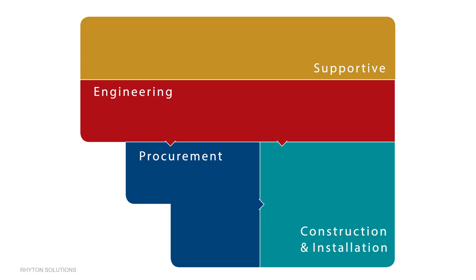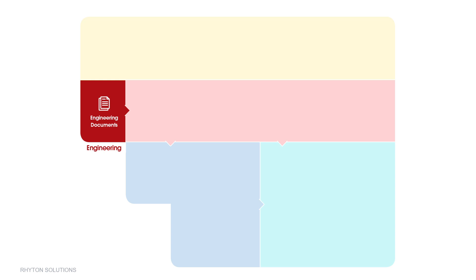Keep in mind that it is possible to use each module standalone as well. Let's have a brief review of the system. Everything starts with the engineering document management system, where the system covers engineering design and flow of documents between project parties, covering the internal and external flow of documents. Ready documents drive into two paths: procurement and construction.